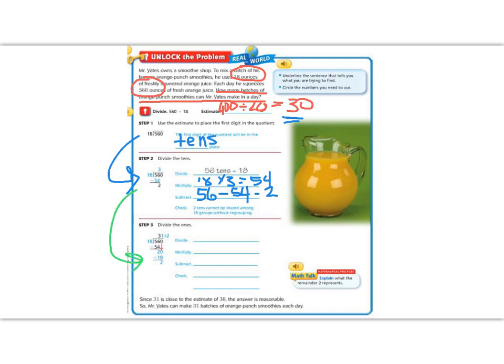Divide the ones. So first off, we're going to bring down that 0 and we're going to decide how many times does 18 go into 20. So 20 divided by 18. 18 only goes into 20 one time. So the 1 goes up on top and we multiply 18 times 1. Then we subtract 20 minus 18, which gives us a remainder of 2. 18 doesn't go into 2, so that's a remainder. So our answer that we get is 31 remainder 2.